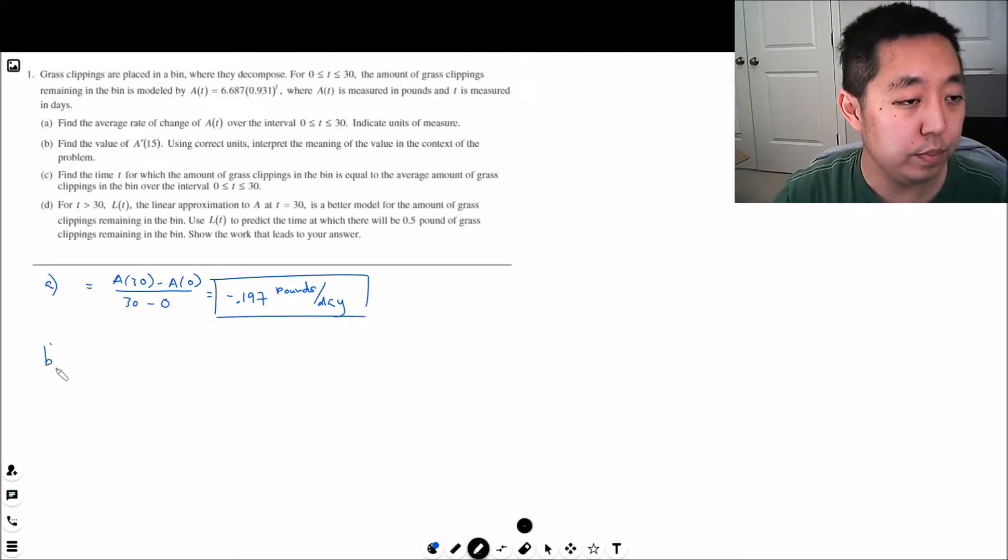Part B: Find the value of the derivative at 15. Well, the derivative: 6.687 is the constant, the derivative is 0.931 to the t, and then I multiply by the natural log of 0.931.